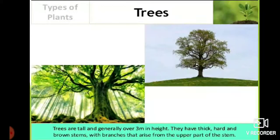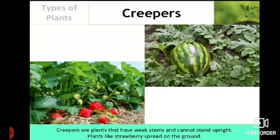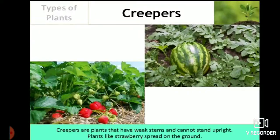Trees are tall and generally over three meters in height. They have thick, hard, and brown stems with branches that arise from the upper part of the stem. Creepers are plants that have weak stems and cannot stand upright. Plants like strawberry spread on the ground, and watermelon is also a creeper.